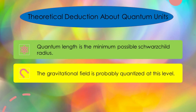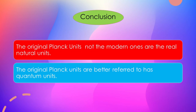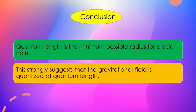The following theoretical deductions can be made about quantum units: quantum length is the minimum possible Schwarzschild radius, and furthermore the gravitational field is probably quantized at this level. In conclusion, what are commonly called Planck units are not Max Planck's original units — the modern units substitute the reduced Planck constant for Planck's constant, throwing the figures off by the square root of 2π. The original Planck units, better referred to as quantum units, are the real natural units. Quantum length is the minimum possible radius for a black hole, strongly suggesting that the gravitational field is quantized at quantum length.